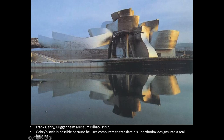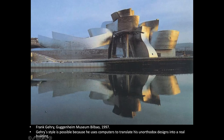Gehry also liked expressive buildings. Before the 1980s it wasn't really possible to build shapes this odd, but with the advent of computers, architects could design pieces that wouldn't have been possible before — computer programs could crunch a million numbers and figure out how to support unorthodox designs and turn them into real buildings. Hopefully that was a good introduction to the types of art we're going to look at. In following lectures we'll get more specifically into individual artists and themes.